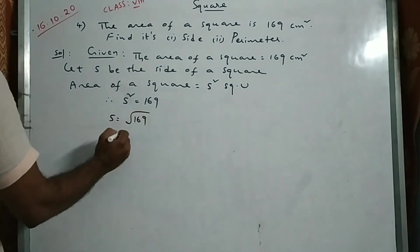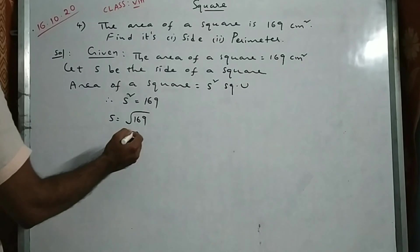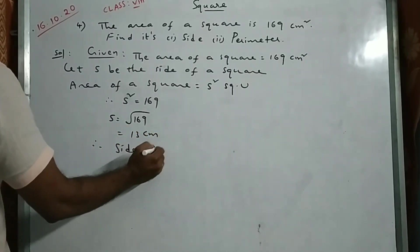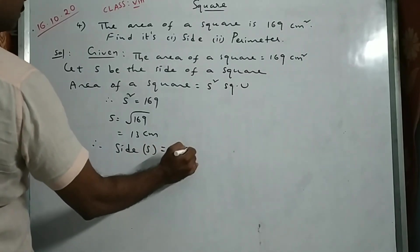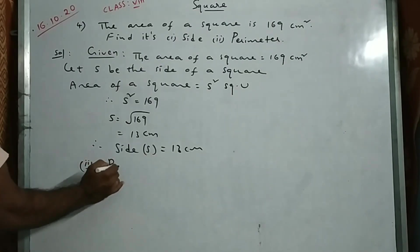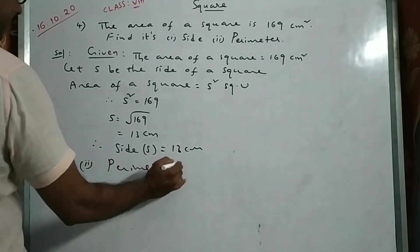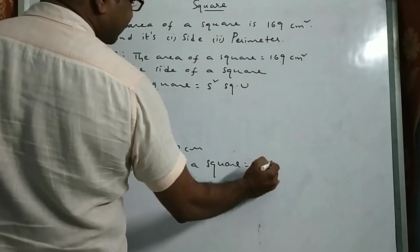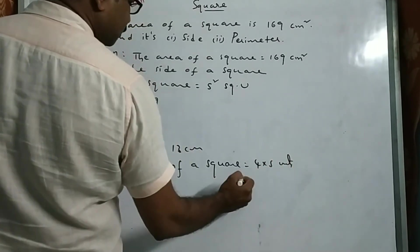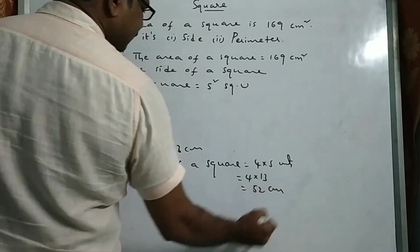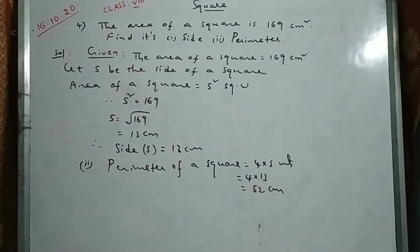Taking the square root: root of 169 equals 13, so side of the square is 13 cm. Now for perimeter of a square: formula is 4 into side, which is 4 into 13, giving 52 cm. You will see some more problems in the next class.